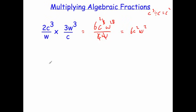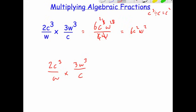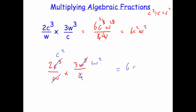Alternatively, you could have cancelled down before you began. So with 2C cubed over W times 3W cubed over C, cancelling before multiplying: C cubed divided by C leaves C squared, and W cubed divided by W leaves W squared. Then you just multiply, so 2C squared times 3W squared gives 6C squared W squared.